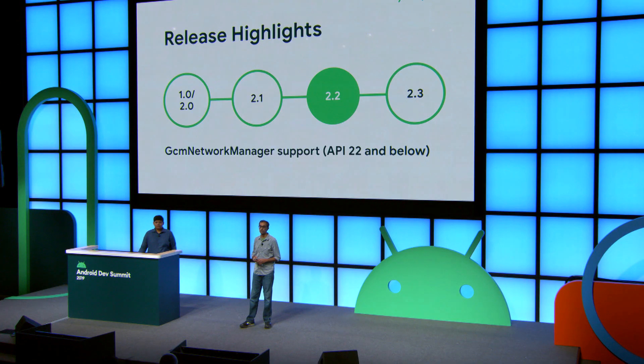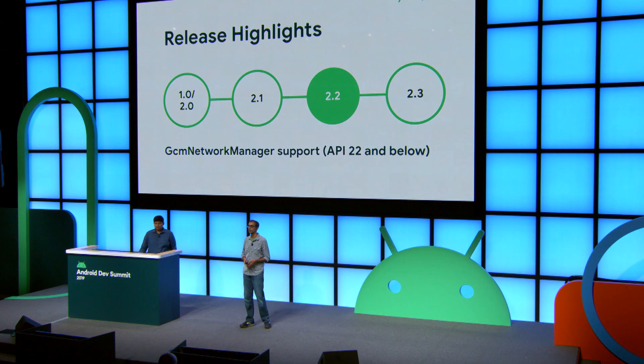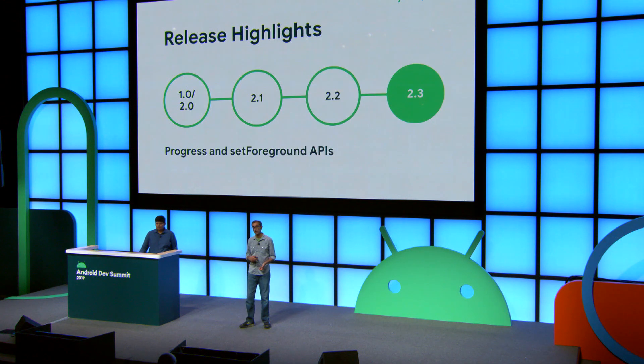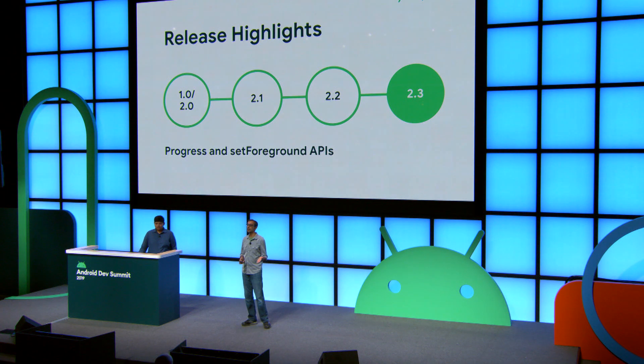2.1 brought you on-demand initialization — we'll be talking about initialization later today, because that's an important topic. 2.2, our latest stable version, is introducing support for GCM Network Manager, and it's optional for API 22 and below, which adds a lot of reliability to your WorkManager. And then 2.3, which we hope will be stable later in the year, brings you progress and set foreground APIs.